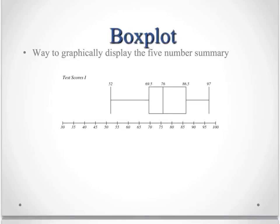And a box plot is simply a way to graphically display a five number summary. So in a box plot, you'll have a line for the minimum, right here. You'll have a line at quartile 1. You'll have a line at the median. You'll have a line at quartile 3. And you'll have a line at the max.